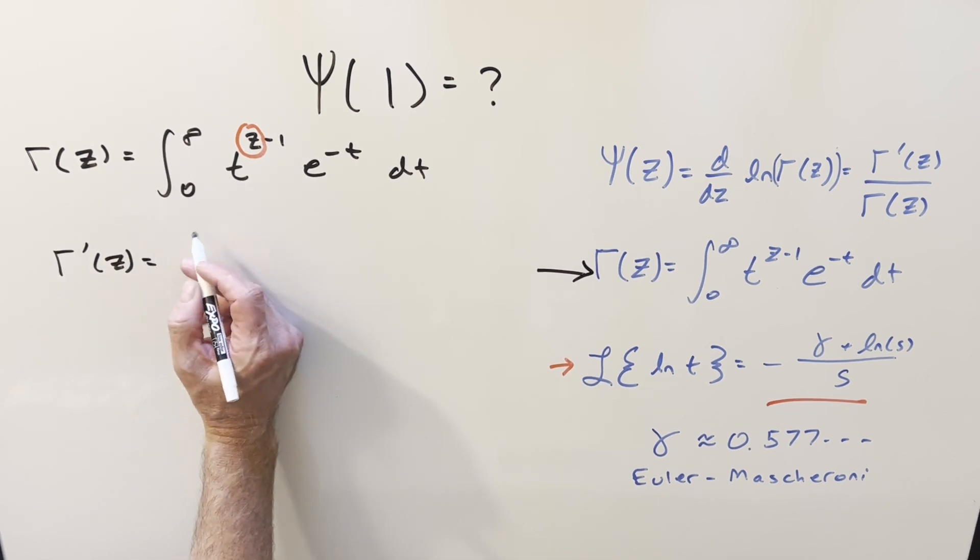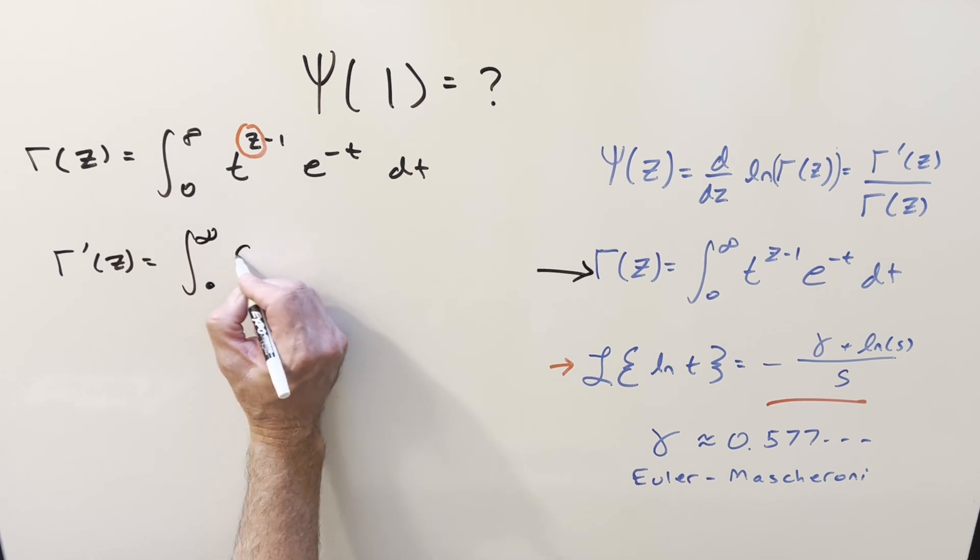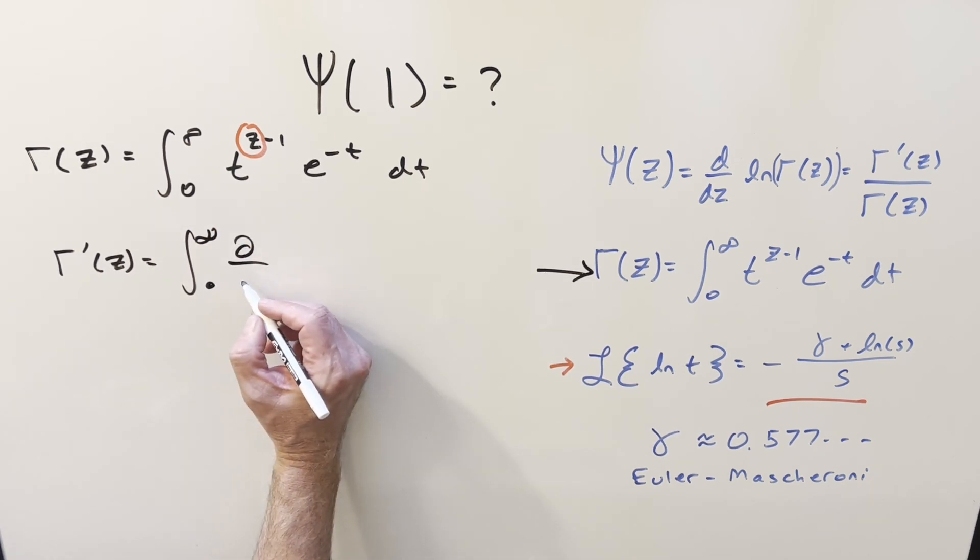And how we'll do that with Feynman's trick is we will differentiate inside the integral sign as a partial. So we'll have this. I don't know if I said integrate. We want to differentiate with respect to Z here.